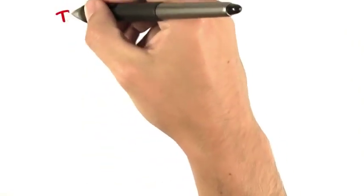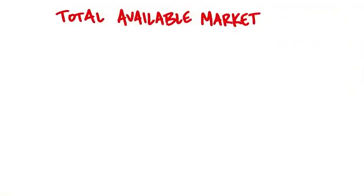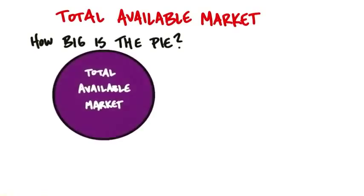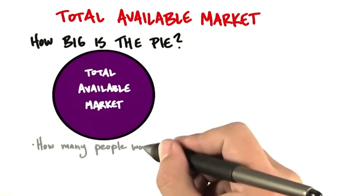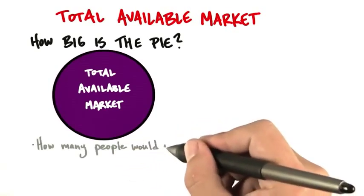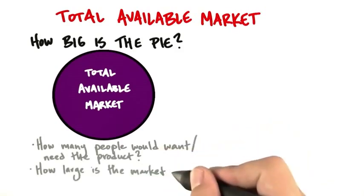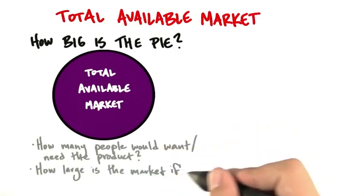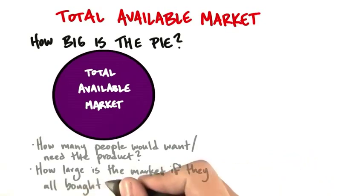The first word we want to think about is something called total available market. I like to think of total available market as a pie — it's the entire pie. Total available market says, how many people or companies, or whatever your unit of sale is, would want or need this product, and how large is the market in dollars or units if they all bought?